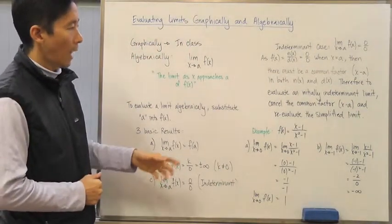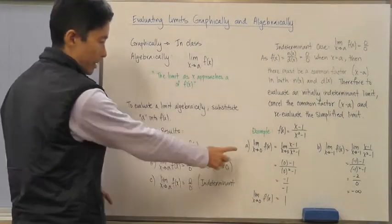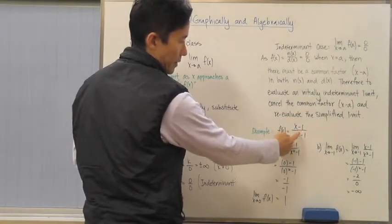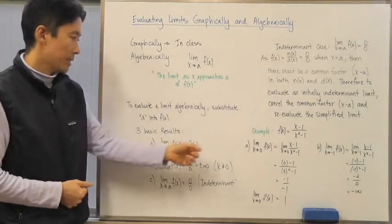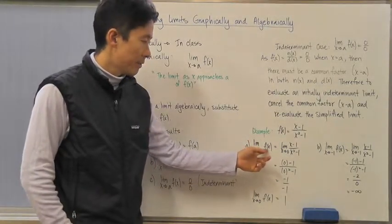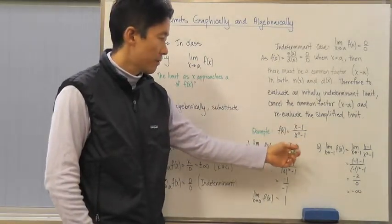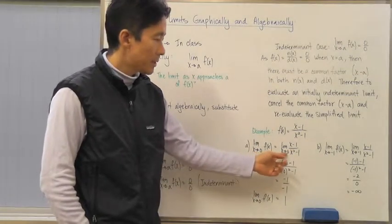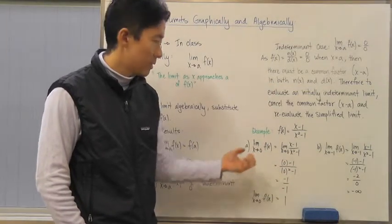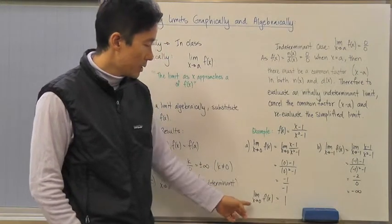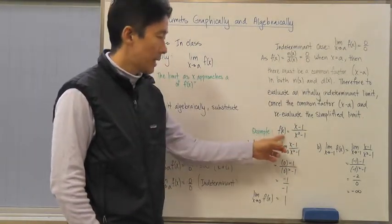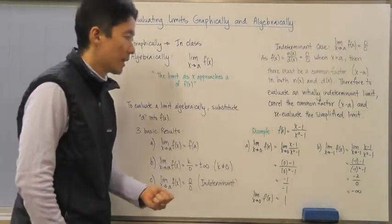Let's look at a specific example. Let f of x equal (x minus 1) over (x squared minus 1). If we take the limit as x approaches zero, we substitute zero in for x: we get negative one divided by negative one, so the limit as x approaches zero of f of x equals one. We'll look at exactly what that looks like on the graph when we come to class.